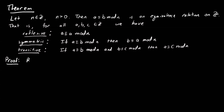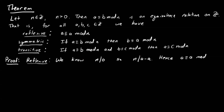First let's prove the reflexive property. We know that n always divides 0, so n must divide a minus a. Hence, a is congruent to a modulo n, and so our relation is reflexive. Pretty straightforward.